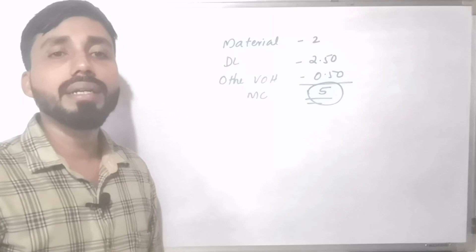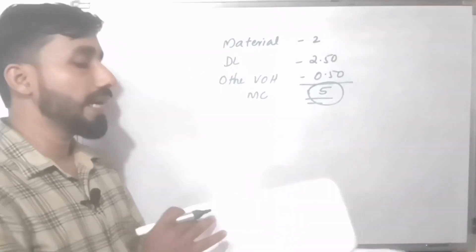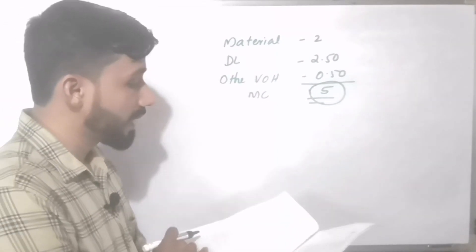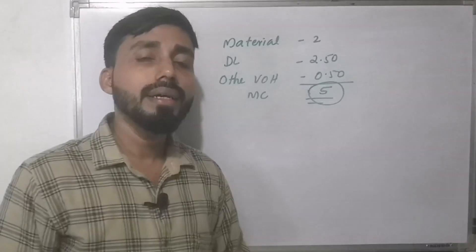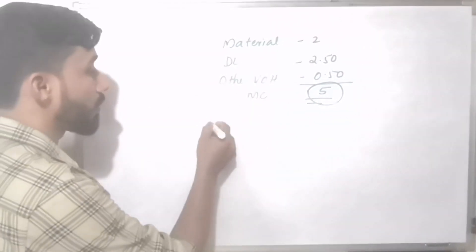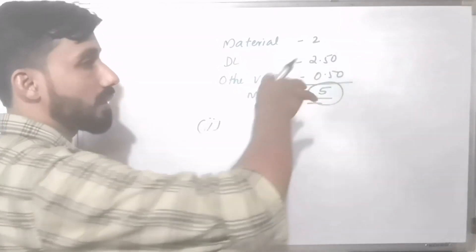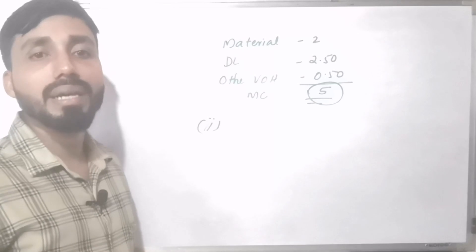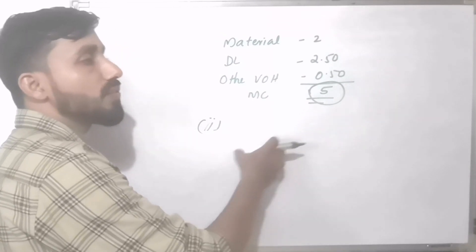For question one: marginal cost is Rs. 5 and the market price is Rs. 5.60, so it is better to make it inside the organisation. If the market price is Rs. 4.60, then the market price is better, so it is preferable to buy from outside.